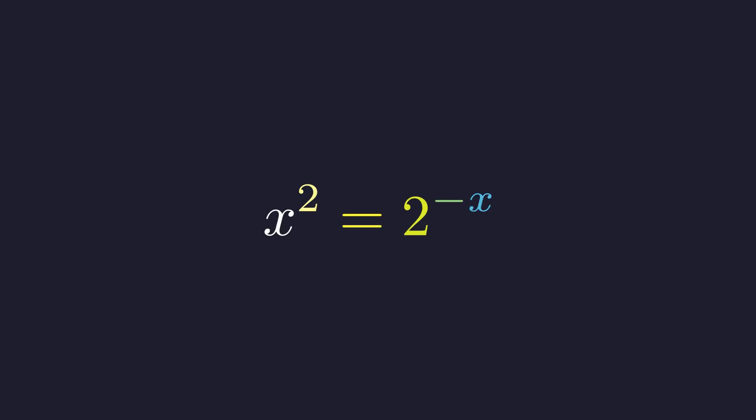This equation, x squared equals 2 to the power of negative x, appears straightforward. However, a complete solution requires a journey through graphical analysis, rigorous calculus, and a special function designed for such problems.